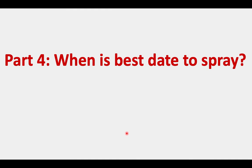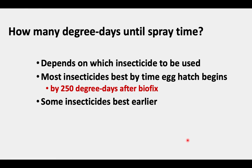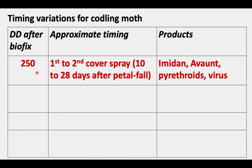Part four: when is the best date to spray? How many degree days until spray time? This depends on which insecticide is to be used. Most insecticides are best by the time egg hatch begins, which is by 250 degree days after biofix. But some insecticides are best earlier. So 250 degree days after biofix is one target — the approximate timing of that is around anywhere between first and second cover spray, which is anywhere from 10 to 28 days after petal fall.